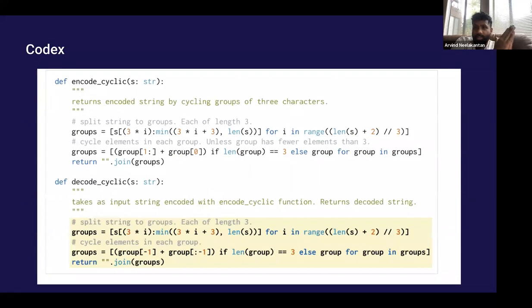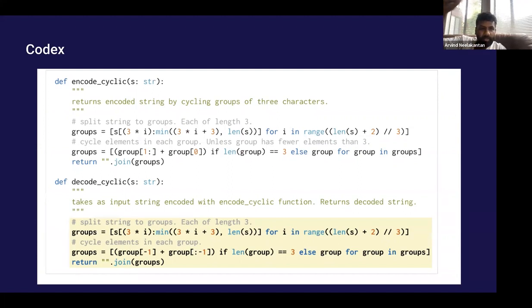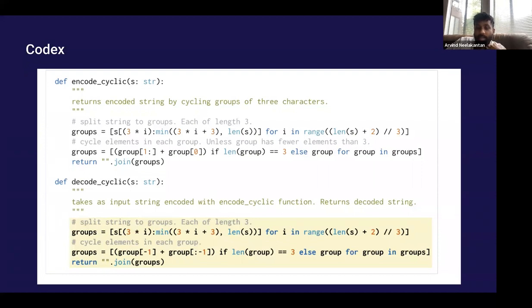Similar to text generation, we also started doing work on code generation. You give it a helper function and a prompt — like a comment in the first line — and then the model fills out the code for you. We have things like Copilot, done in collaboration with GitHub, that you can play with. These models are pretty good at generating code given a text description of the task you want.